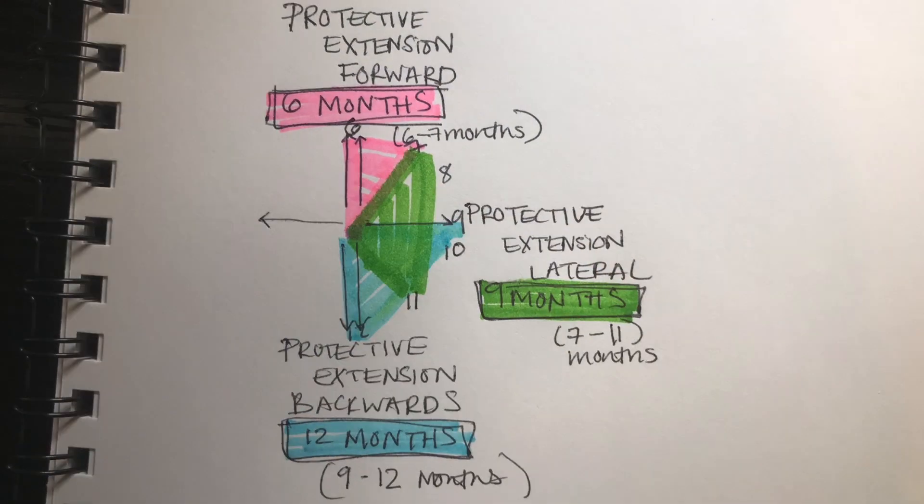And the last reflex is your protective extension backwards reflex. You should see the baby have this reflex from about 9 to 12 months.